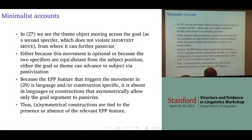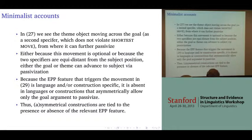This is essentially a language- and construction-specific parameter, absent in languages or constructions that asymmetrically allow only the goal to passivize. Thus, asymmetrical constructions are tied to the presence or absence of the relevant EPP feature.